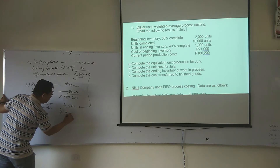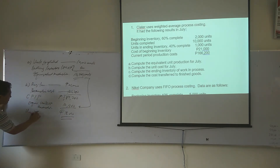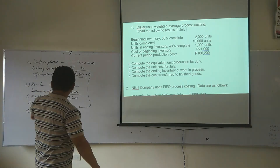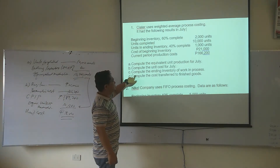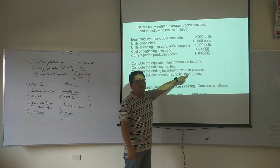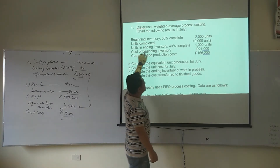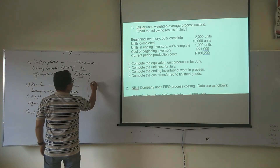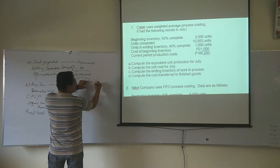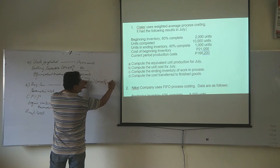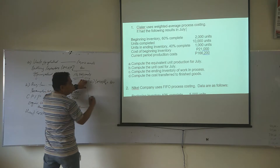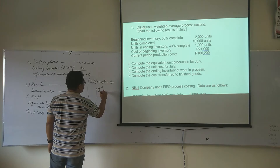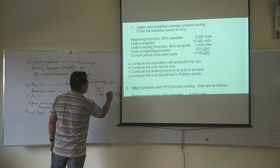That gives us our unit cost. So the question is to compute the inventory of work in process. Ending inventory is 1,000 units, 40% completed. So 1,000 times 40% completed — that's 400 equivalent units — times our unit cost.